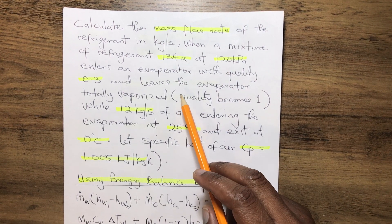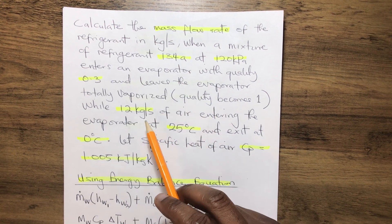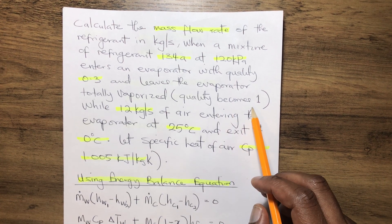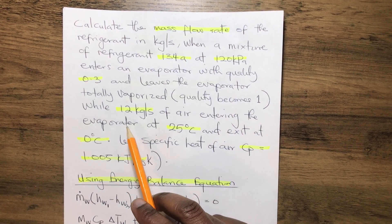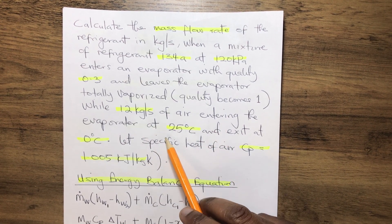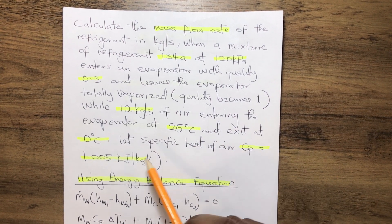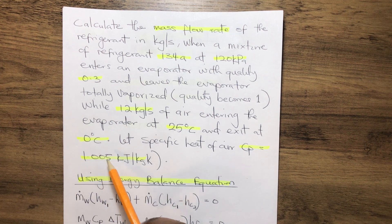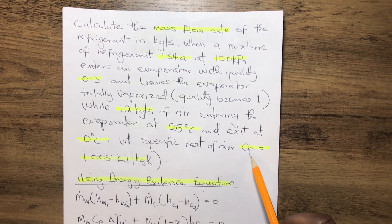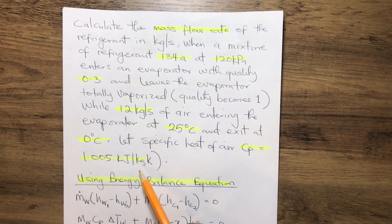While 12 kilograms per second of air entering the evaporator at 25 degrees Celsius and exit at 0 degrees Celsius. Let the specific heat of air CP equals 1.005 kilojoules per kilogram Kelvin.